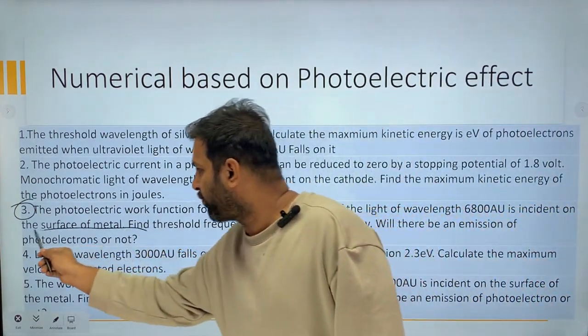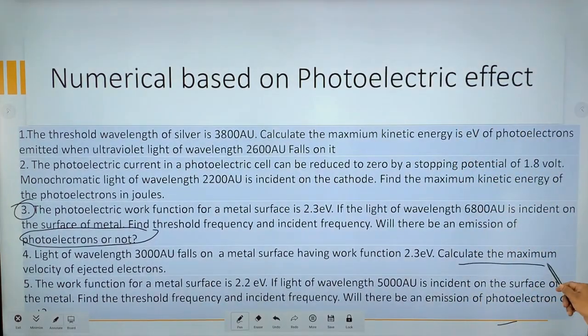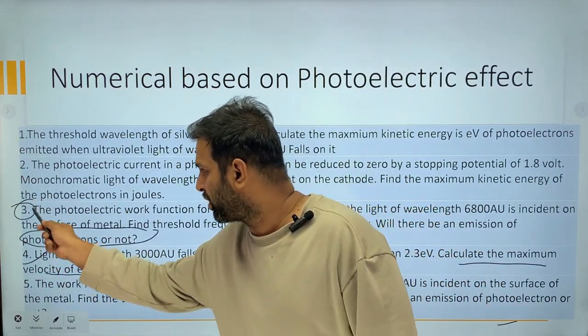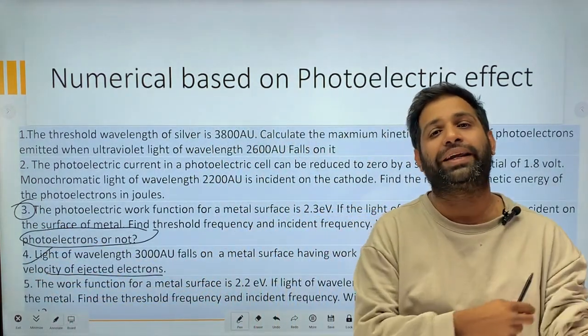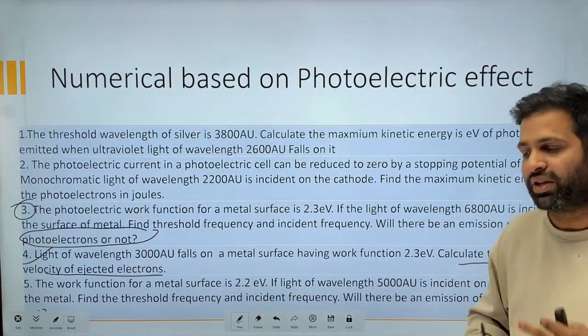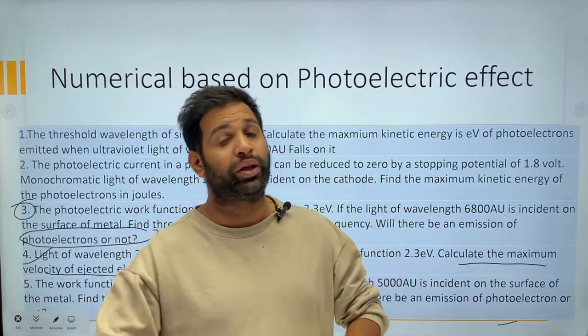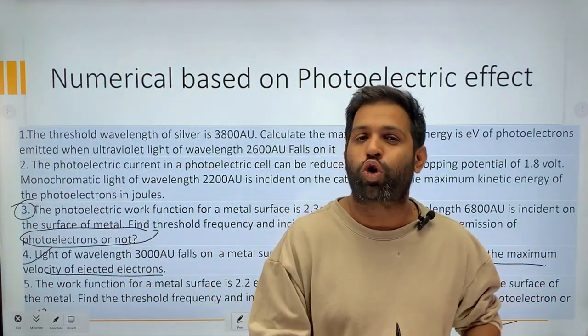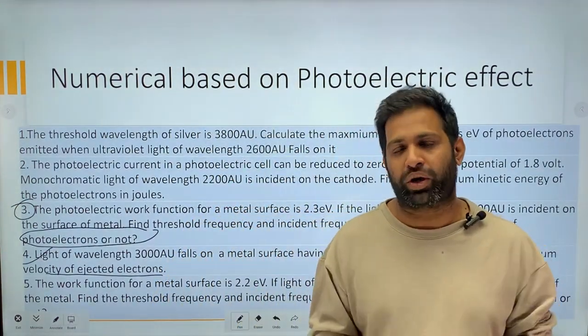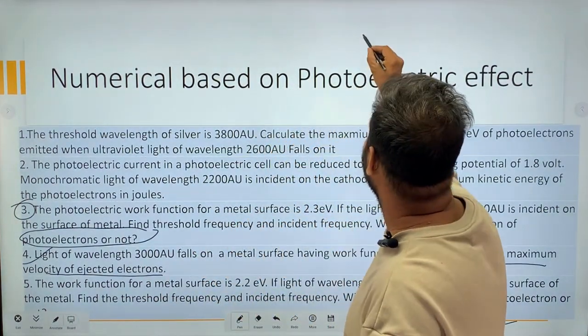Okay so iske upar kuch sums maine aapko diya niche description me aap dekh sakte iske questions phir photoelectric effect jo equation hai uske upar ke sums okay that is very very important aur khas karke isme mein ek question kaun sa hai question number 3 ye achhe se karke jana question number 3 ki photoelectric effect ho raha hai ki nahi ho raha hai okay is there is a photoelectrons emitted or not ye wala ek question aur velocity find karna maximum velocity find karna projected ejected electron ka so question number 3 aur question number 4 to aapko karke hi jana hai.